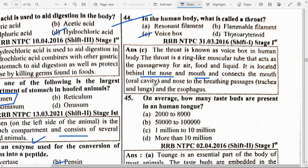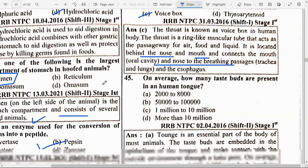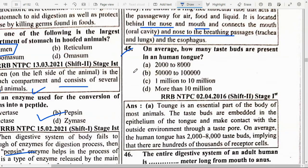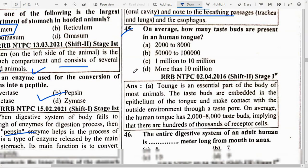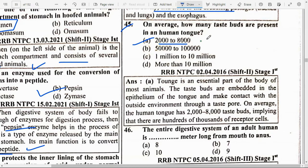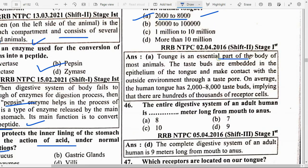On average, how many taste buds are present on the human tongue? Option A — 2,000 to 8,000. The tongue is an essential part of the body. Taste buds are embedded in the epithelium of the tongue and make contact with the outside environment through a taste pore. On average the human tongue has 2,000 to 8,000 taste buds.